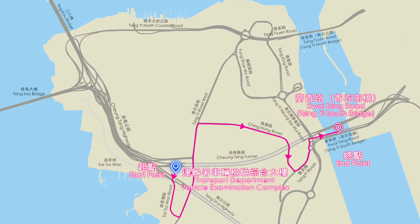Start from the Transport Department Vehicle Examination Complex. Go along Sideshow One Road, Qingyi Road West, Qinghong Road, Qingyi Road and Kwai Qing Road, and arrive at Qingyi South Bridge.